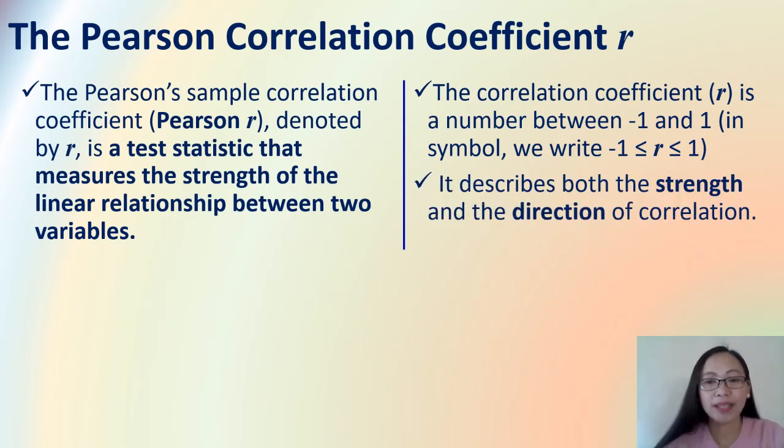The Pearson R describes both the strength and the direction of correlation. For strength, for example, the closer your value to 1 or negative 1, the stronger the relationship. And for the direction of correlation, we have the negative correlation and the positive correlation.